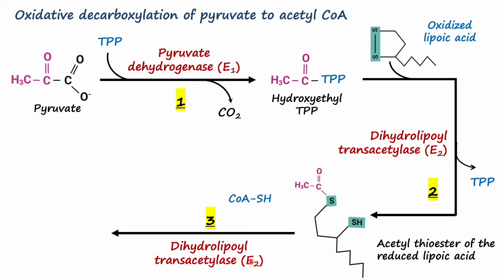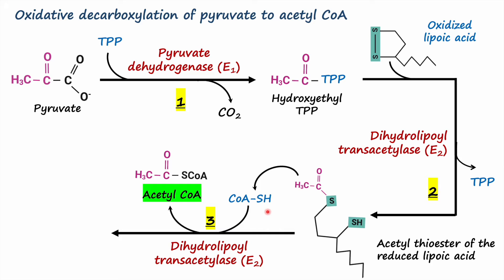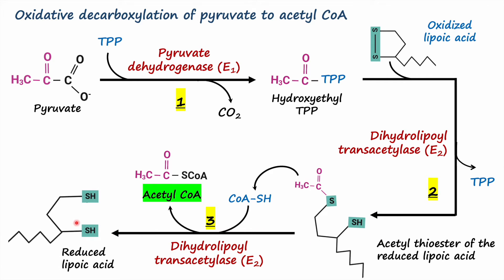Step three is also carried out by dihydrolipoyl transacetylase E2 enzyme, this time requiring coenzyme A. In this reaction, the acetyl group from reduced lipoic acid is transferred onto coenzyme A, synthesizing acetyl coenzyme A. While the acetyl group is transferred, the half-reduced lipoic acid becomes fully reduced, now having two thioester groups, also called dithiol.